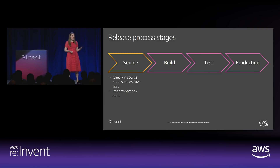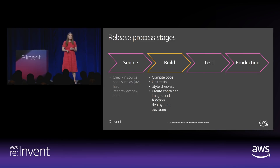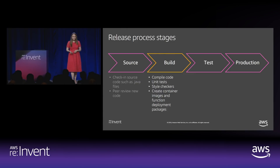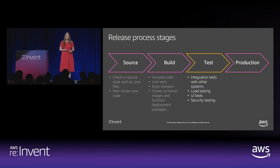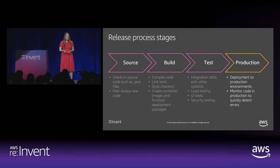Let's look at the actions we're taking in each phase. In the source phase, we're checking in source code and hopefully doing peer review, because if you're doing continuous deployment, that's the last time you'll see that code before it goes to production. In the build phase: compiling code, doing unit tests, doing style checkers, creating container images and function deployment packages. In the test phase, as opposed to unit tests done in the build phase, you're doing integration tests with other systems — also load testing, UI testing like Selenium, or security testing like penetration testing. Finally, in production, you're deploying new code into that environment and monitoring it for any errors introduced.